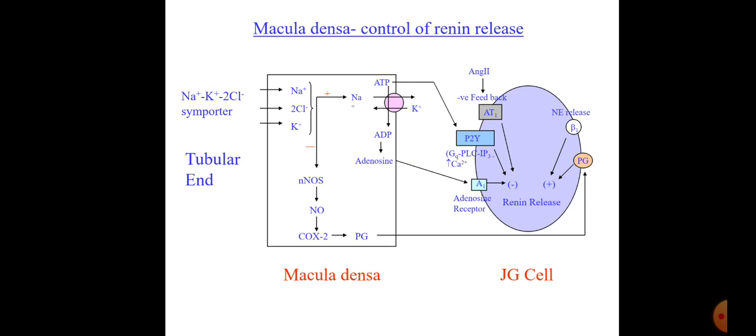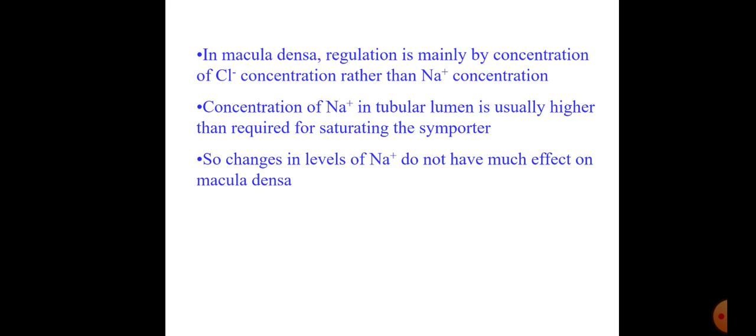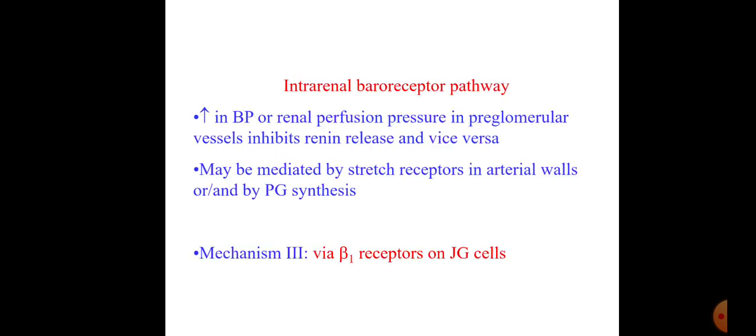To summarize: beta receptor stimulation by norepinephrine/epinephrine increases renin release; prostaglandin tends to increase renin release; ATP, adenosine, and angiotensin 2 decrease renin release. Macula densa regulation is mainly done by chloride concentration rather than sodium concentration. If less chloride is delivered to the macula densa, renin release is increased; if more chloride is delivered, renin release is decreased. Changes in sodium concentration do not have much effect on the macula densa.